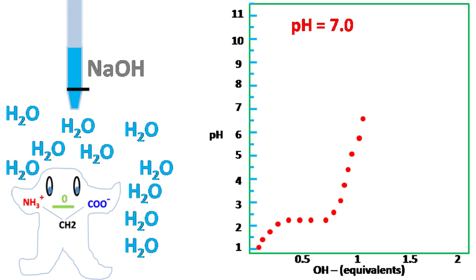At this stage, the glycine becomes zwitterion. It means it has both positive and negative charge.